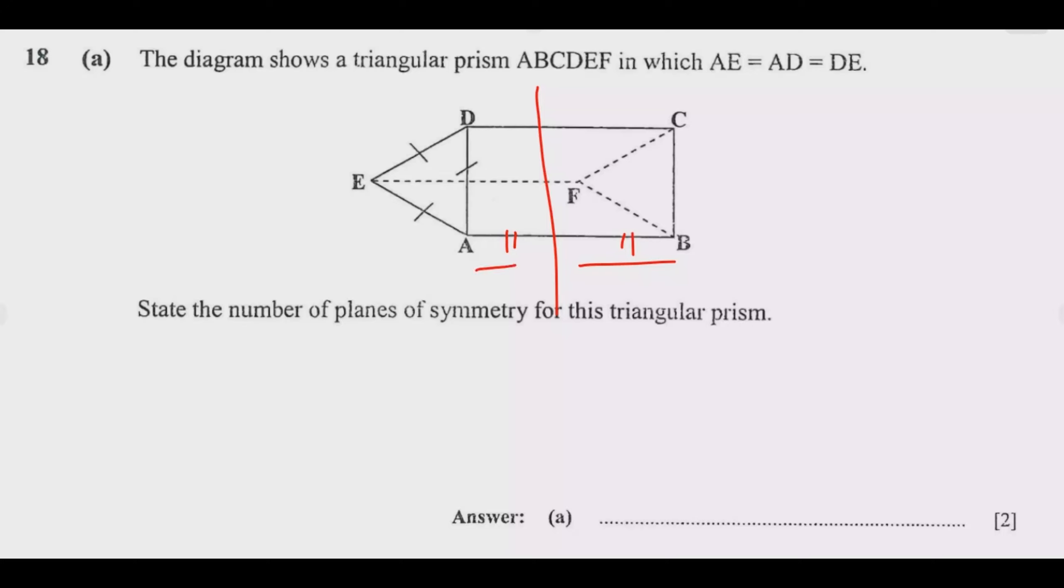Number two is you come and cut through this point. It's cutting me through this point like this, so this will be the cut. That's the second line of symmetry or plane of symmetry.